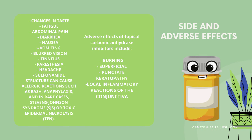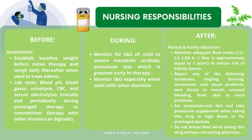Side and Adverse Effects: Changes in taste, fatigue, abdominal pain, diarrhea, nausea, vomiting, blurred vision, tinnitus, paresthesia, and headache. The sulfonamide structure can cause allergic reactions such as rash, anaphylaxis, and in rare cases Stevens-Johnson syndrome (SJS) or toxic epidermal necrolysis (TEN). Adverse effects of topical carbonic anhydrase inhibitors include burning, superficial punctate keratopathy, and local inflammatory reactions of the conjunctiva.